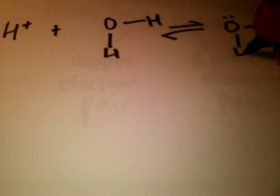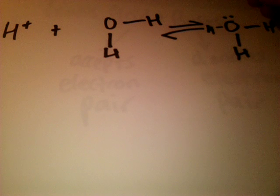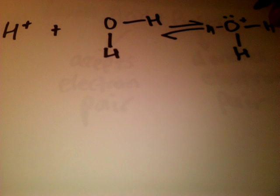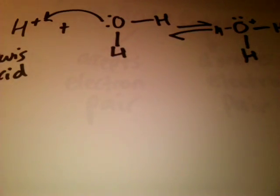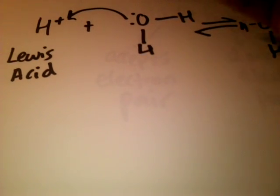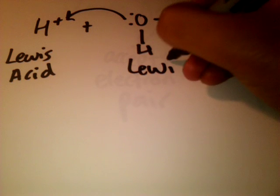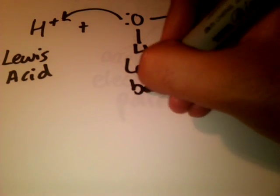The Lewis acid would be the hydrogen ion because it will be accepting a pair of electrons from the water molecule. So H⁺ is the Lewis acid because it's accepting the electron pair. The water would be the Lewis base because in this scenario it will be donating the electron pair.